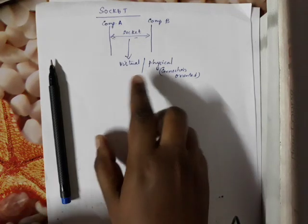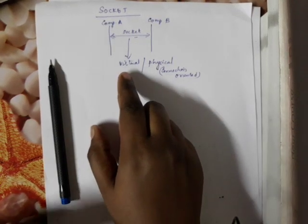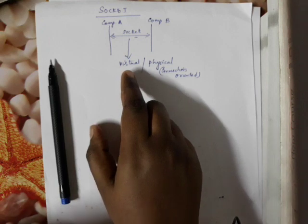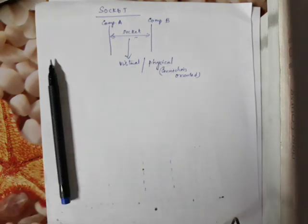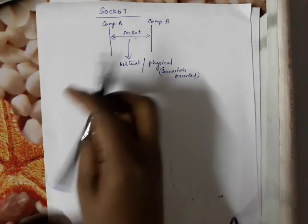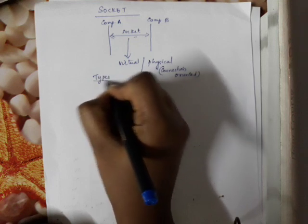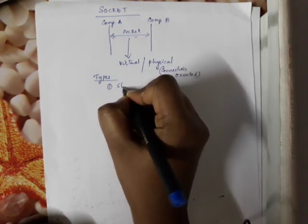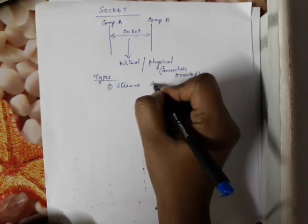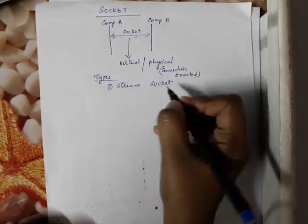In the virtual case, there is an imaginary socket — an example is the internet. These are the main concepts behind the socket. Now we will discuss the types of socket. There are four types. The first type is stream socket.